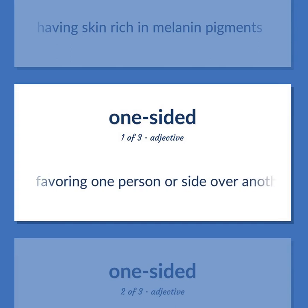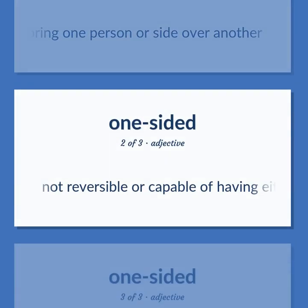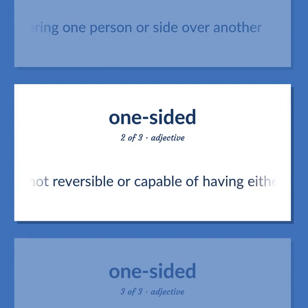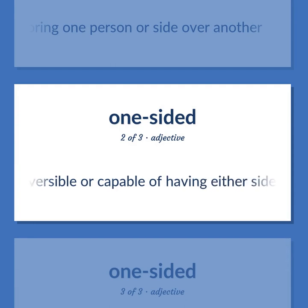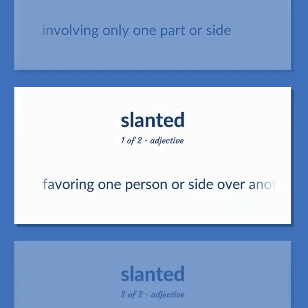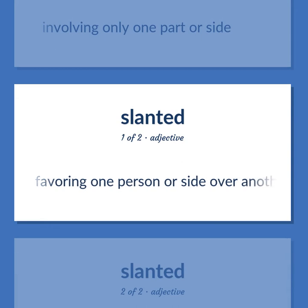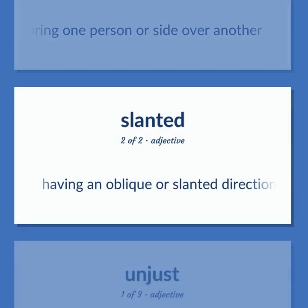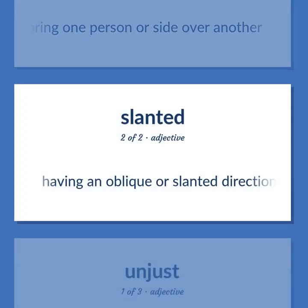One-sided — favoring one person or side over another. Not reversible or capable of having either side out. Involving only one part or side. Also: having an oblique or slanted direction.